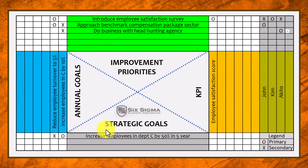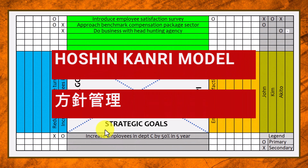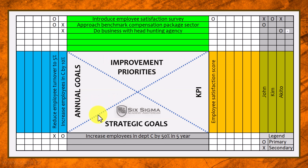What you see here is the so-called Hoshin Kanri model, sometimes also referred to as the X matrix. Why X matrix? I'm not 100% sure, but I think it has something to do with the big X in the middle — could be the reason.